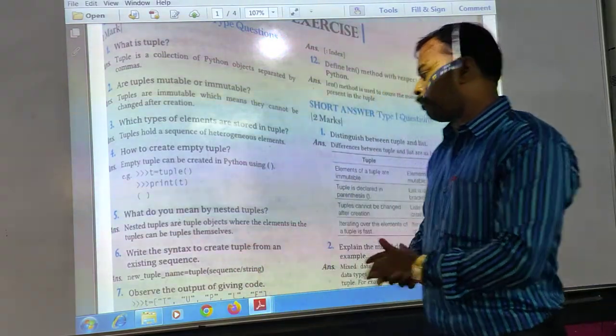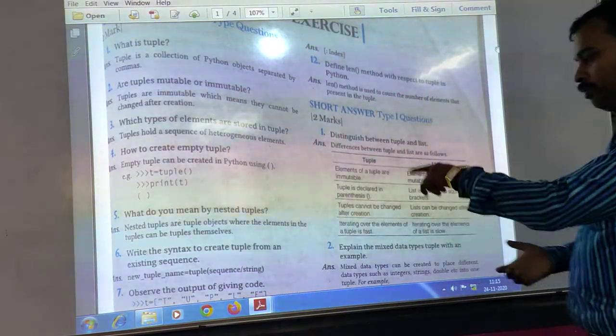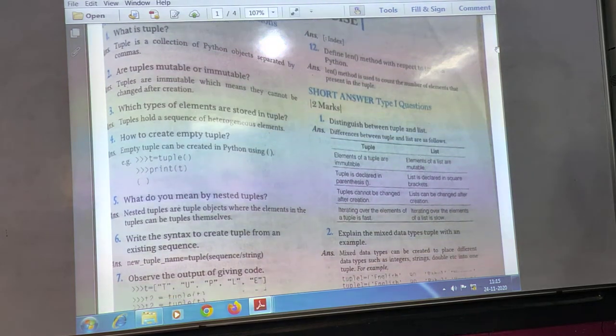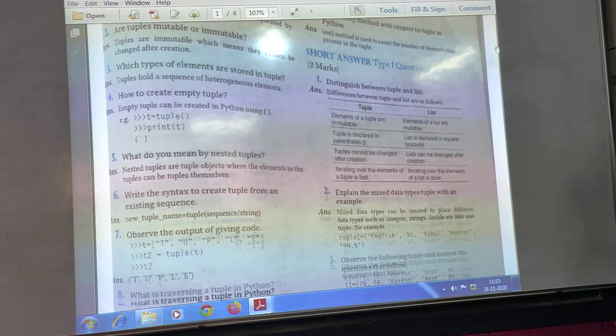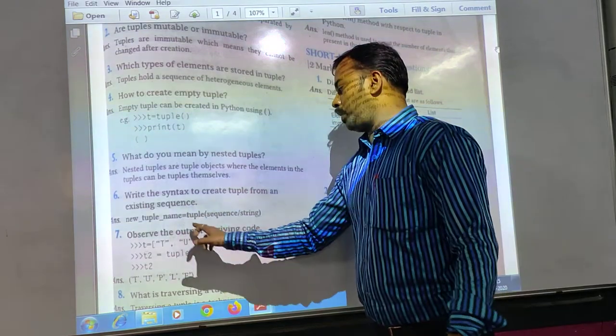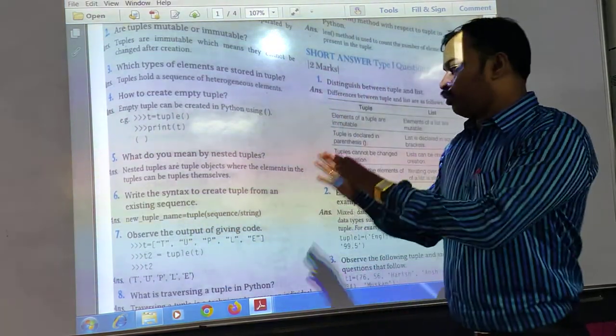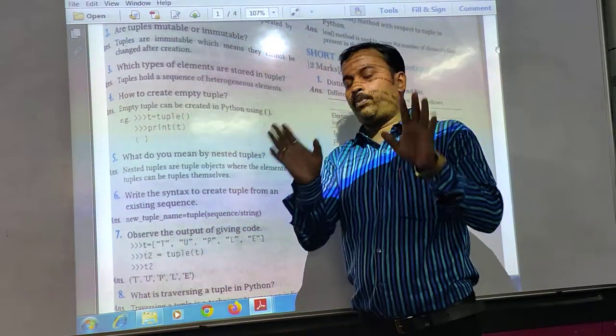What are the syntax to create a tuple from an existing sequence? New tuple underscore name, this is just a variable name and after that you give the method name, that is tuple. In this way you can create a simple tuple.